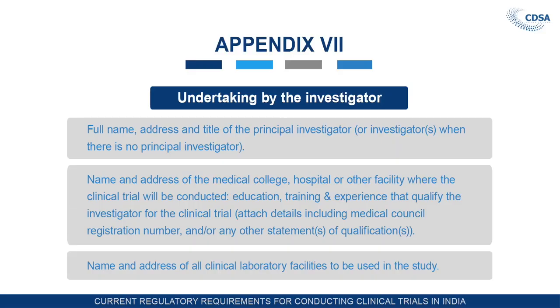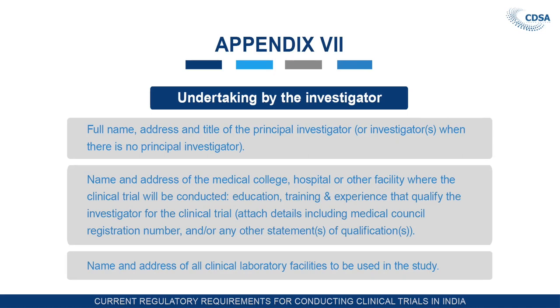Appendix 7 is the most important — the undertaking by the investigator. While giving the undertaking, the investigator must fill in the following: full name, address and title of the principal investigator; if there are multiple sites, the details of all investigators must also be given. The name and address of the medical college, hospital, or other facility where the clinical trial will be conducted must be given; wherever the trials are conducted, the address details of those hospitals or sites must be provided.